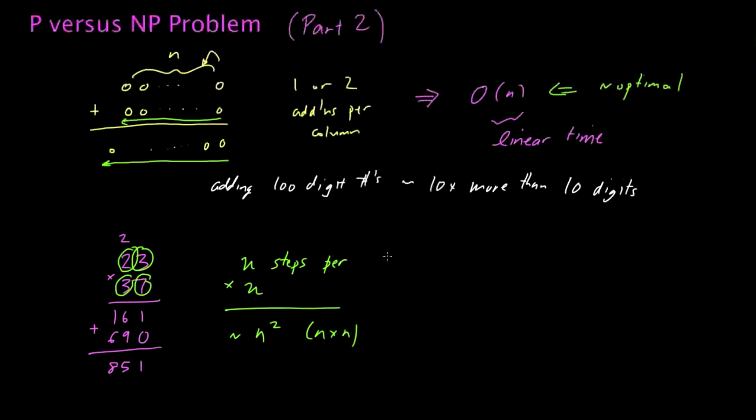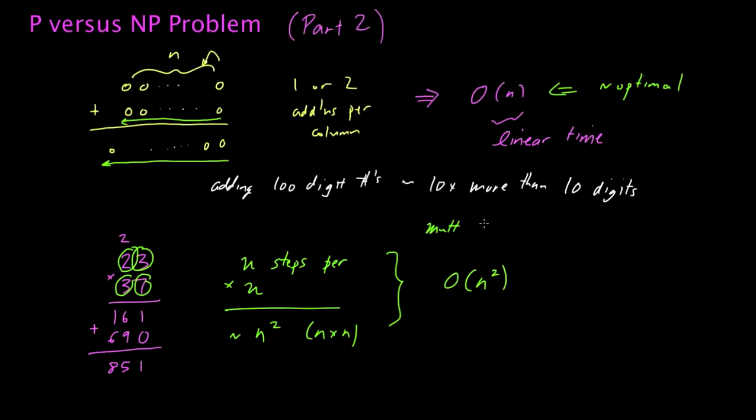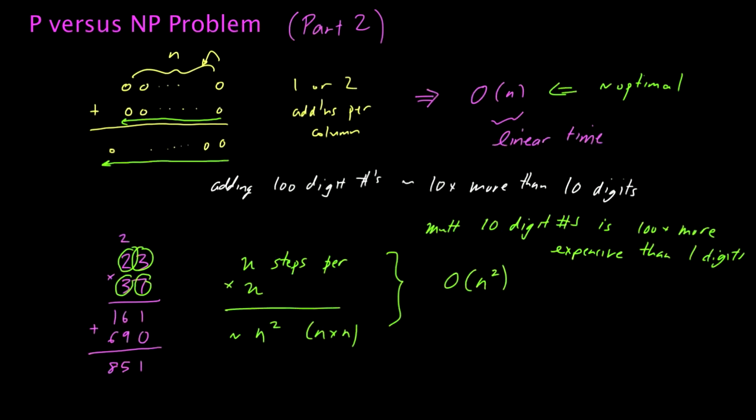That's basically n squared is just n times n, because I needed to do n basic multiplications per digit, and I have n digits. So I get a total time of approximately n squared. In computer science parlance, when we have a running time that's proportional to n squared, we say the running time is big O of n squared. If I have to multiply two 10-digit numbers, multiplying two 10-digit numbers is going to be about 100 times more expensive than just multiplying two 1-digit numbers.